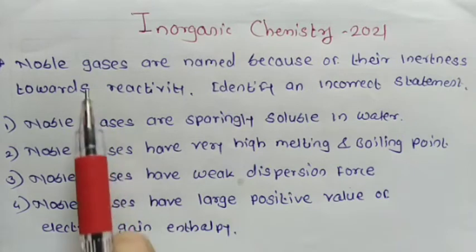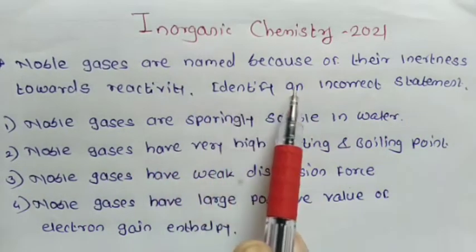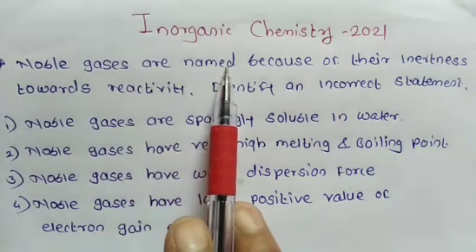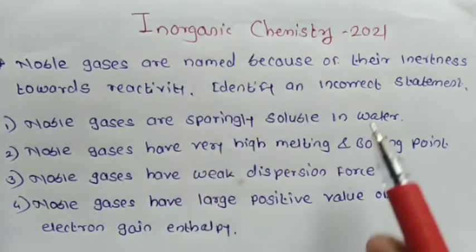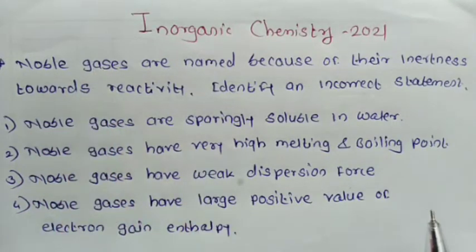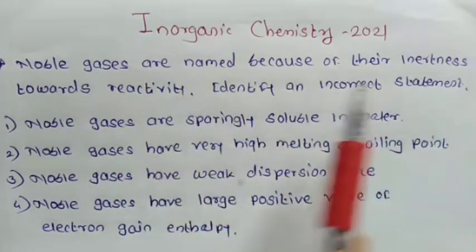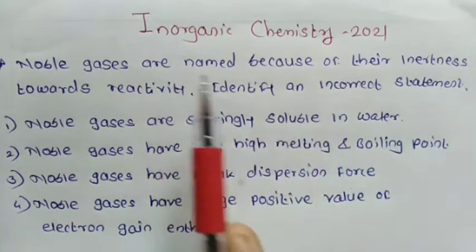First question: Noble gases are named because of their inertness toward reactivity. Identify the incorrect statement. Noble gases are present in group 18 elements, called real gases or noble gases, because of their inertness toward reactivity. Find the incorrect statement about noble gases.